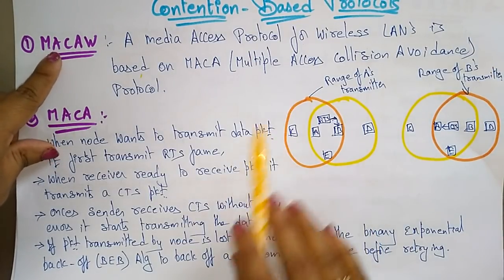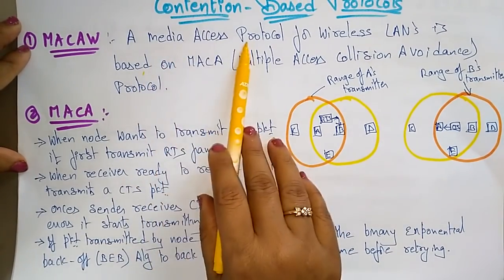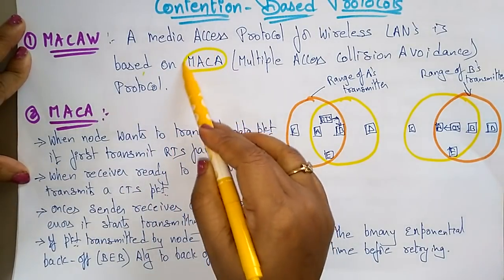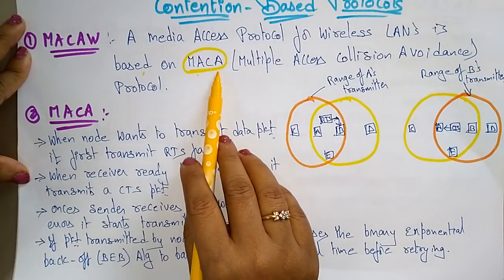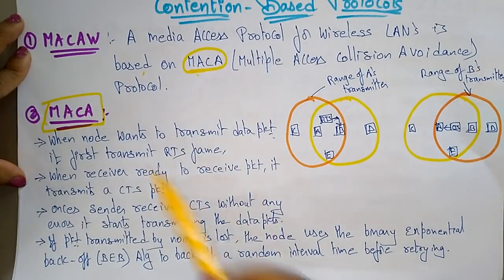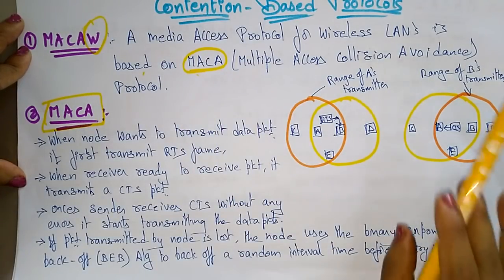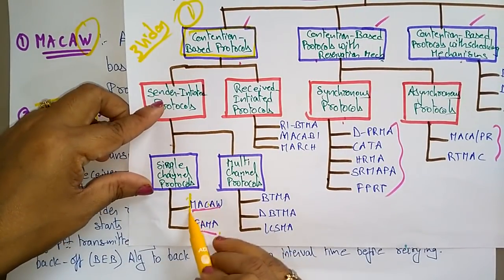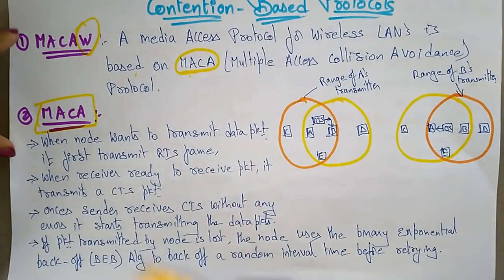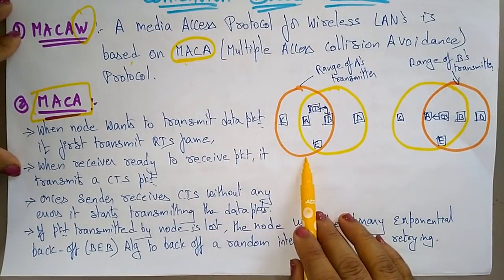MACAW stands for Media Access protocol for wireless LANs. MAC stands for Multiple Access Collision — MA means Multiple Access — and the protocol is based on MACA, the Multiple Access Collision Avoidance protocol. The wireless MAC is based on MACA. Before going to MACAW, let's understand MACA, Multiple Access Collision Avoidance.